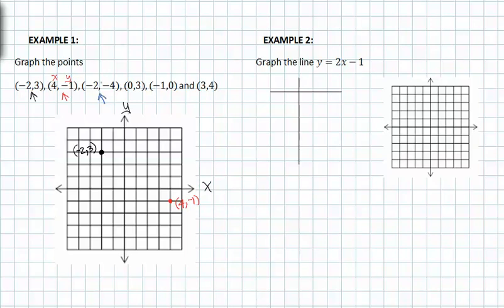The coordinate point (-2, -4) means we start at the origin and we are going to head to the left two spaces, and then down four spaces. And this is the coordinate point (-2, -4).